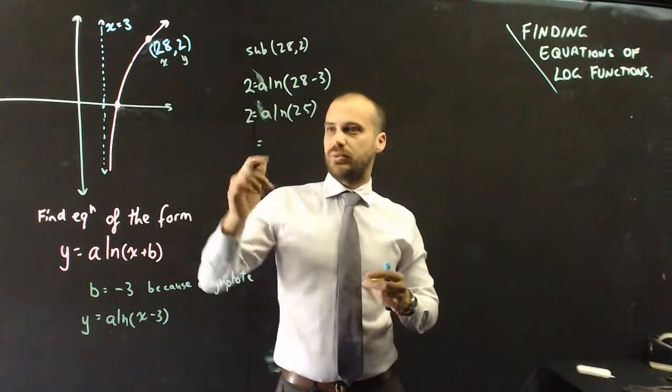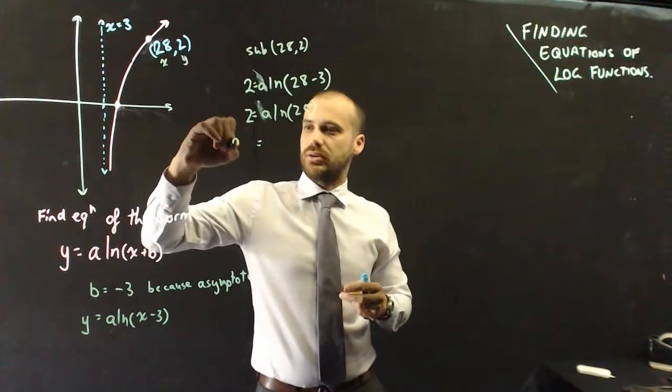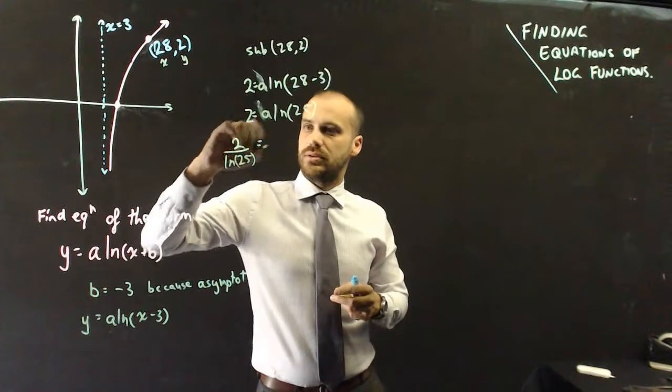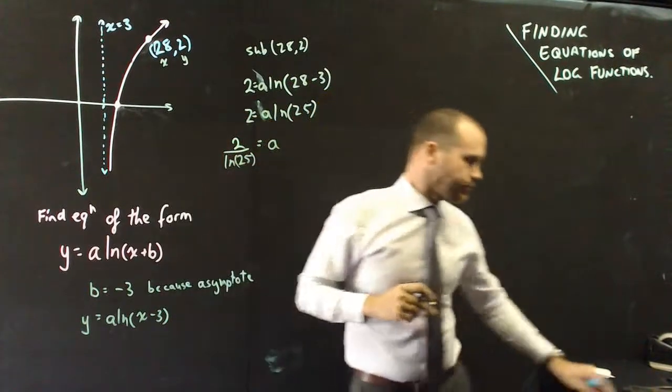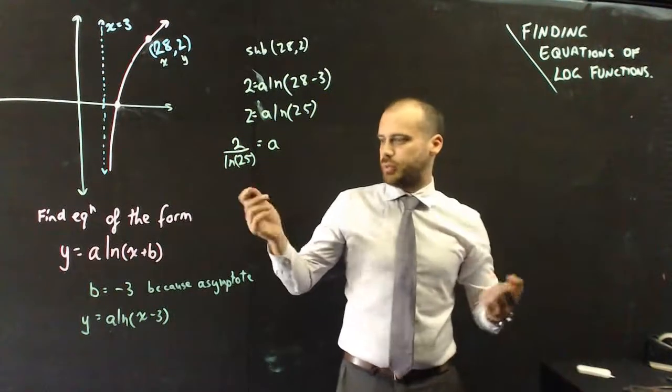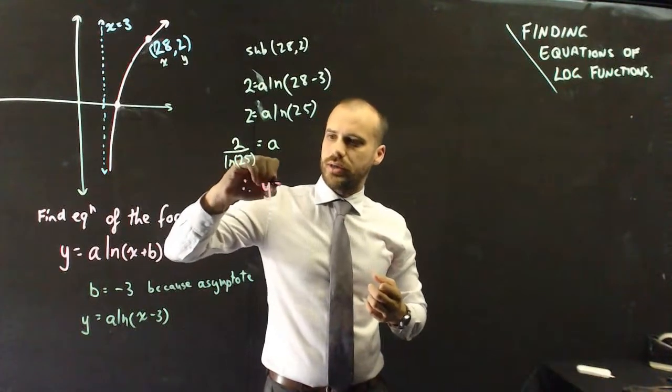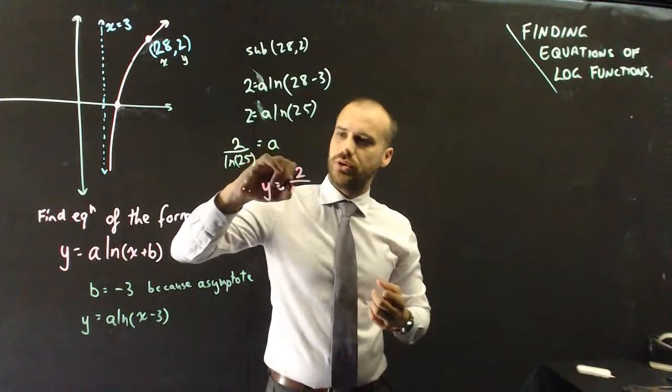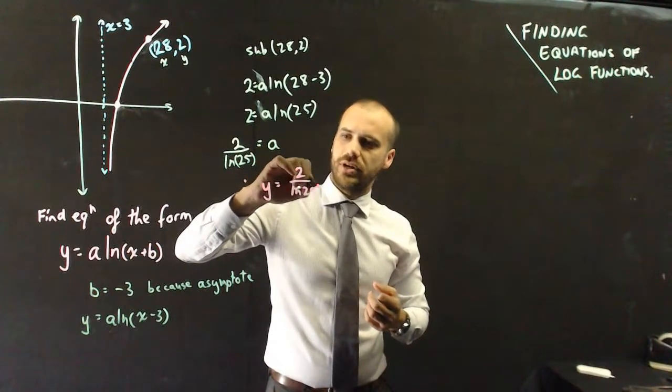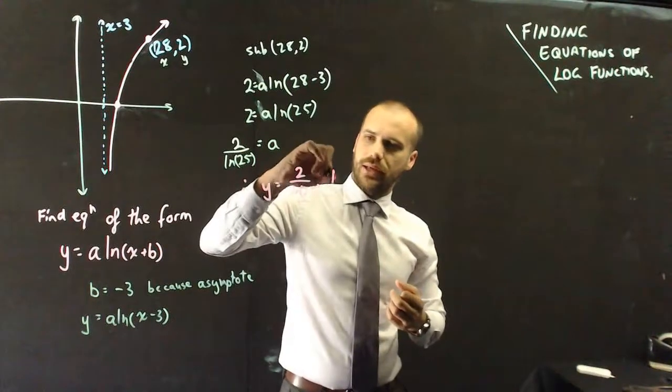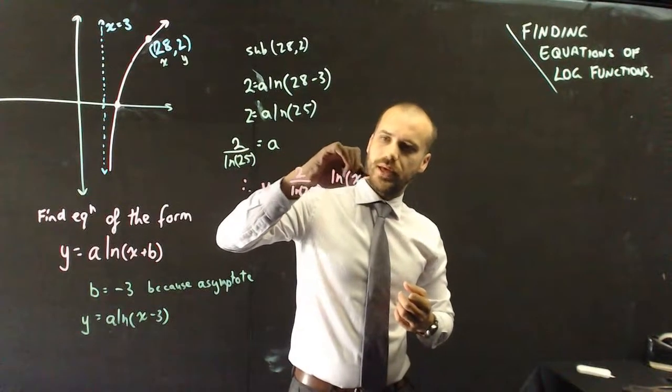And then, pretty straightforward now, we know that a is going to be equal to 2 over ln(25). It's really the end of the question now. We know everything we need to know. Therefore, y equals 2 over ln(25), ln(x minus 3).